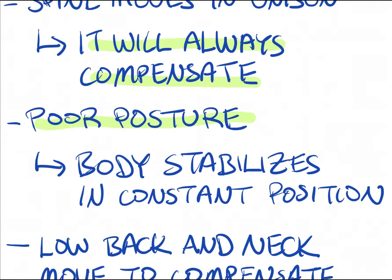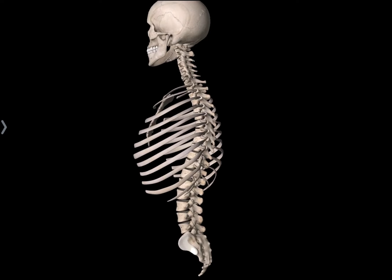When you have poor posture, the body will stabilize itself in that position because the body always tries to stabilize itself in whatever position it's always in — it wants to protect itself. The body's nature is to protect itself from harm. Even though there may not be much actual harm possible, the body will still stabilize. If you're constantly in poor posture, the body thinks this is normal because it's what it's accustomed to, and it stabilizes in that position.